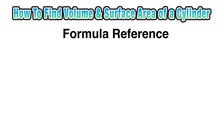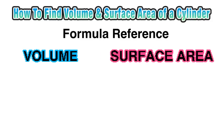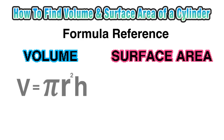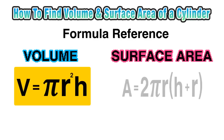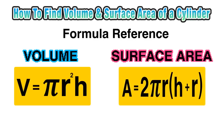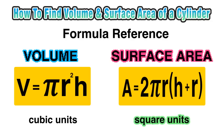So now we're ready to familiarize ourselves with the formulas for finding both volume and surface area of a cylinder. The volume of a cylinder can be found by multiplying pi times the radius squared times the height. Surface area can be found by multiplying the product of 2, pi, and the radius by the sum of the height and the radius. Remember that volume is measured in cubic units, and surface area will be measured in square units.